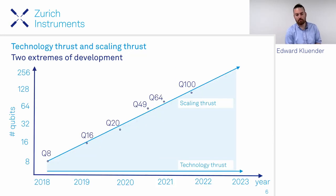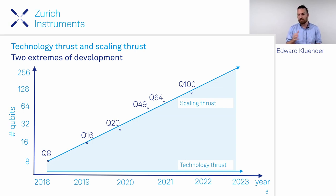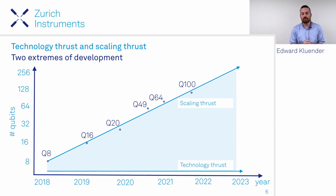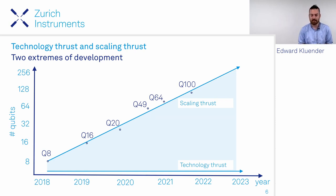During this presentation we'll focus on lock-in amplifiers and how they can be used for material characterization to improve qubit performance. There are essentially two main thrusts for quantum computing: the scaling thrust, where people are expanding to hundreds or thousands of qubits, and a simultaneous technology thrust where people study single or few qubit systems to fundamentally understand and improve their properties.